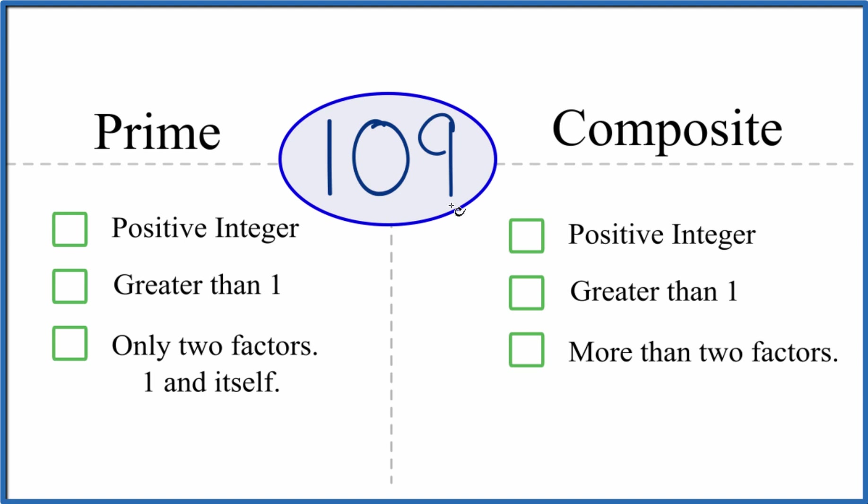Is it a positive integer? It's positive—we have this whole number here. Is it greater than 1? Yeah, 109 is greater than 1.